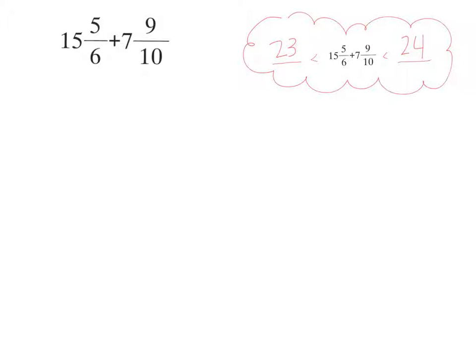Because we know that 15 plus 7 is 22, but 5/6 plus 9/10 is going to be at least 1 because both of those fractions are more than 1/2. We know that the lower end of our answer is going to be 23. So our answer probably will be somewhere between 23 and 24. Now let's use the commutative property to rearrange these numbers.